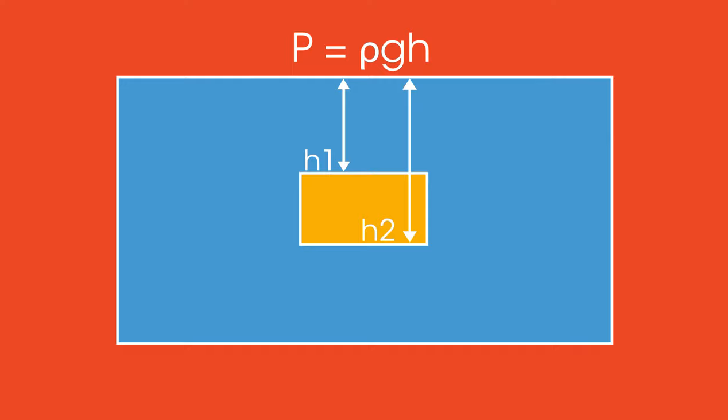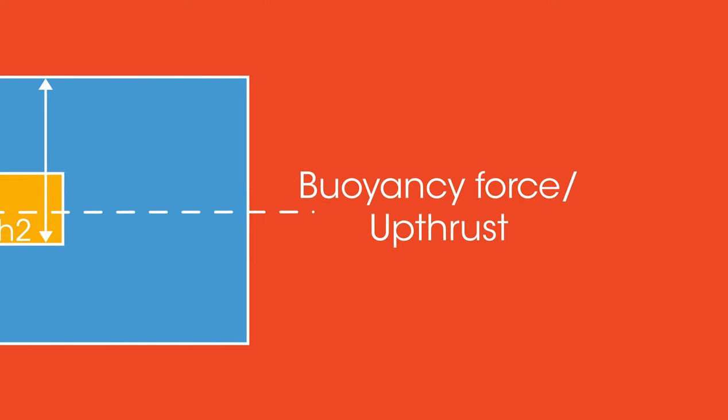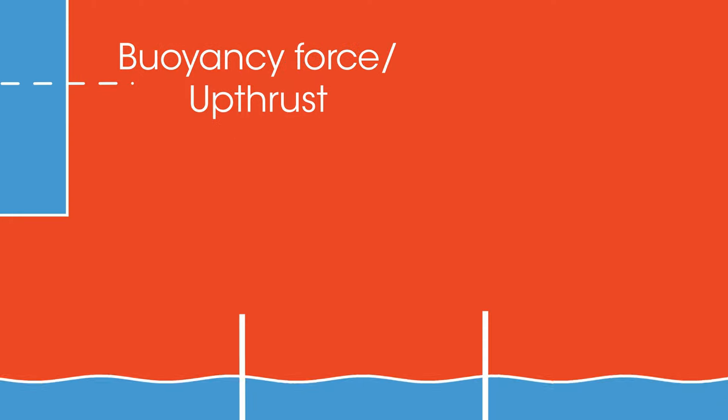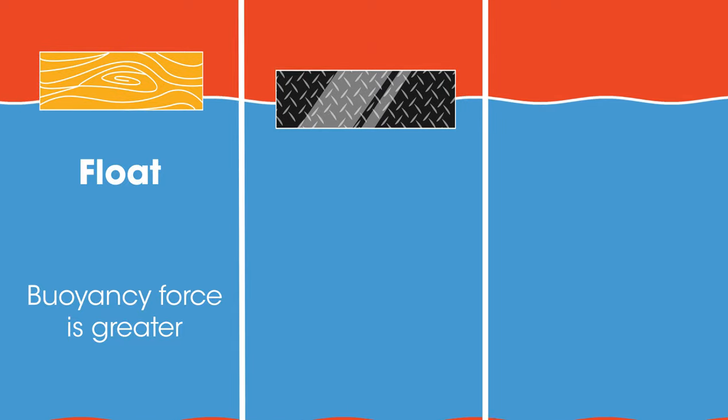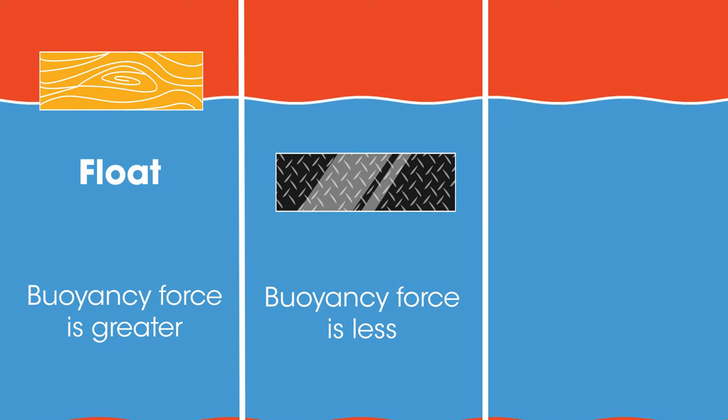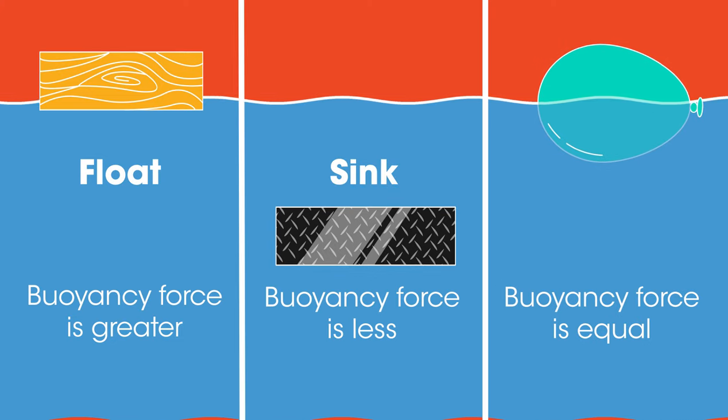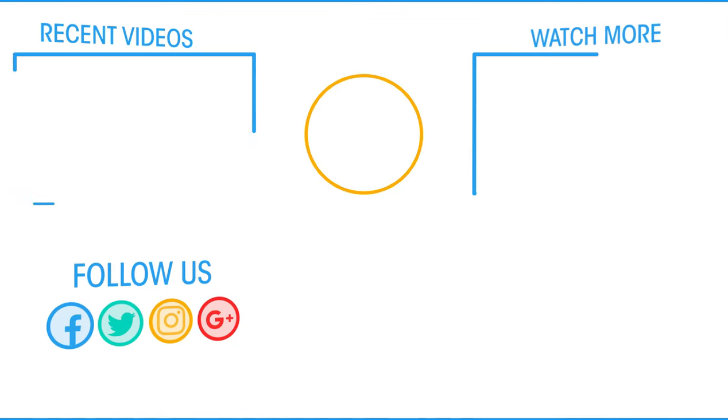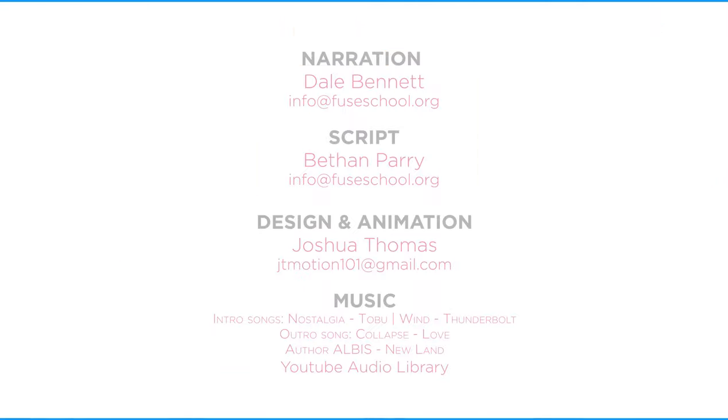The difference between these two forces causes there to be a net force upwards called the buoyancy force or upthrust. If the buoyancy force is greater than the weight of the object, the object will rise up through the liquid. If the buoyancy force is less than the weight of the object, the object will sink. If the buoyancy force is equal to the weight of the object, the object will float.